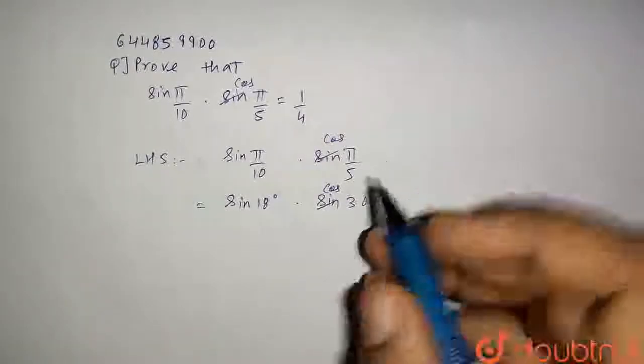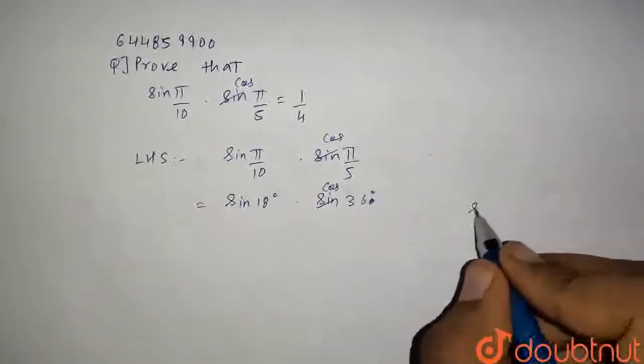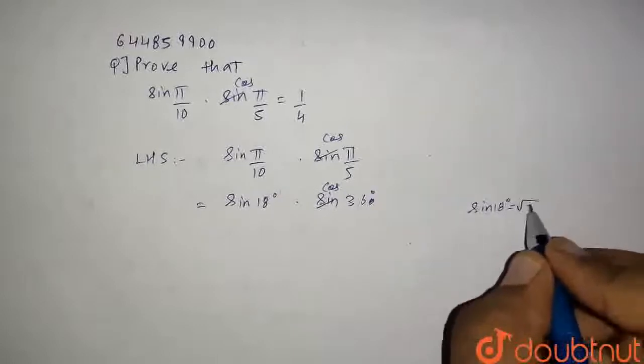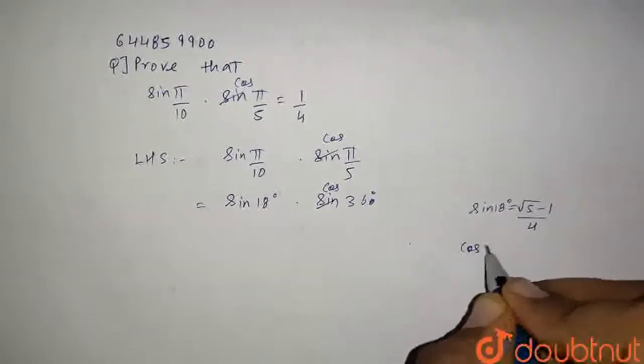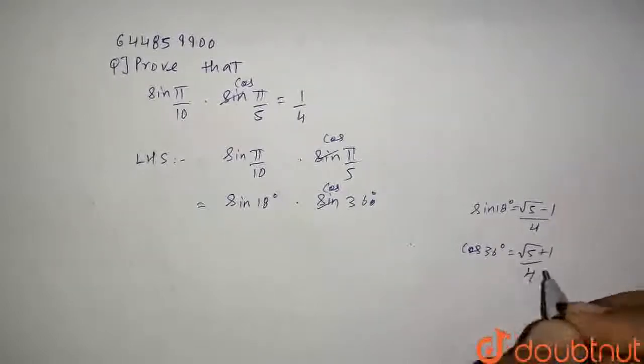Now, for this question firstly, the values of sin(18°) and cos(36°) we should know. So sin(18°) = (√5 - 1)/4 and cos(36°) = (√5 + 1)/4.